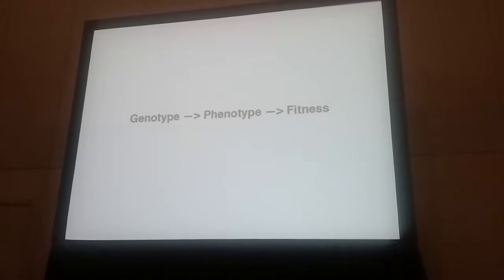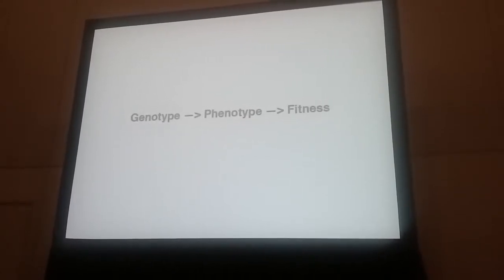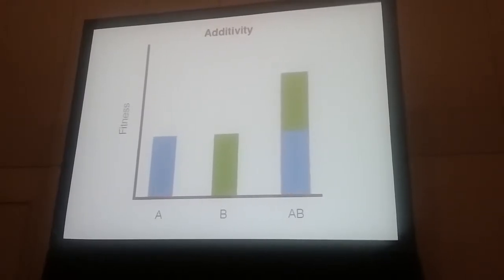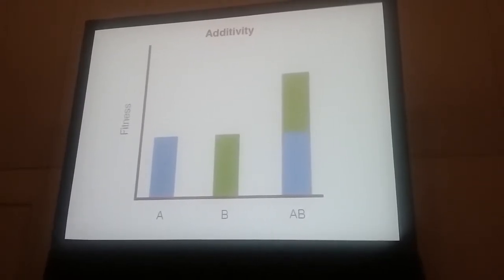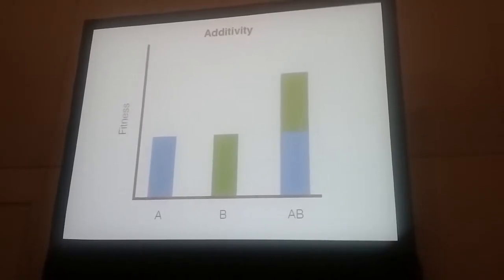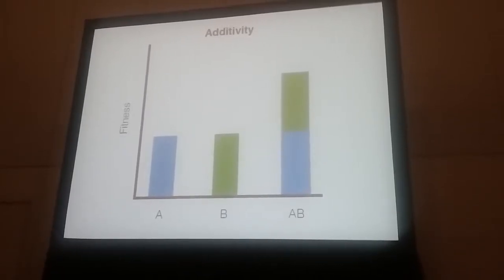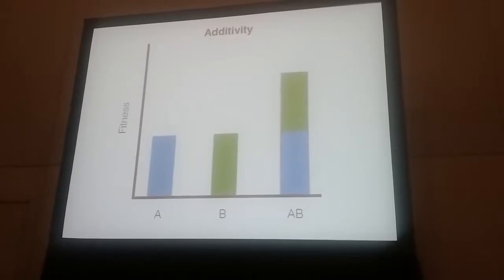This wouldn't be that big of a deal to understand if everything were additive. So if you imagine this case where there are two alternative alleles, A and B, each contributing an arbitrary amount of fitness here — they're equal — we combine those two together, then you get exactly double that amount. So this would be the case where we just have an additive, a lack of interaction.